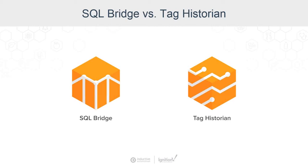By comparison, the SQL Bridge module is what we like to call a transaction manager. It is a way of moving data between an OPC server or PLC and a SQL database. We can move data any way that we want — either on a schedule, on a timer, or on triggers. There is really a big difference between these two modules: SQL Bridge can perform a lot of functionality, whereas Tag Historian is focused on trending and being easy to use.